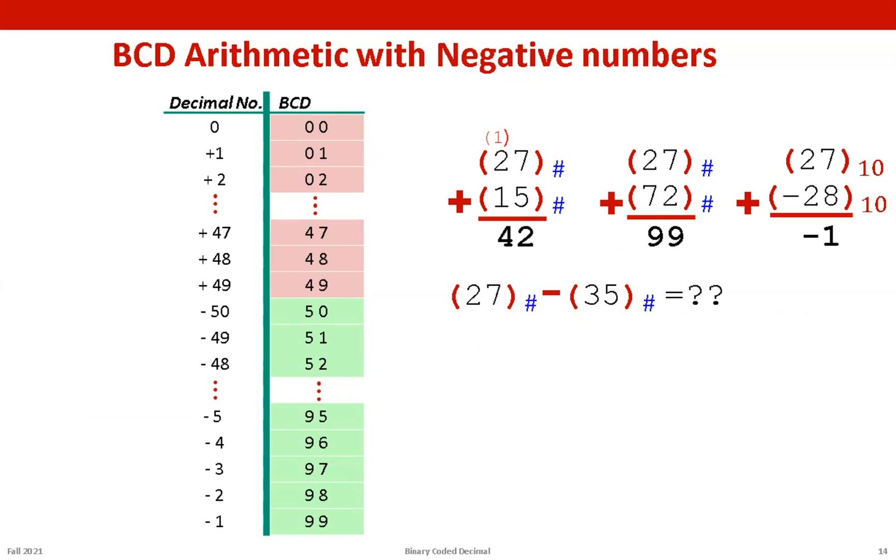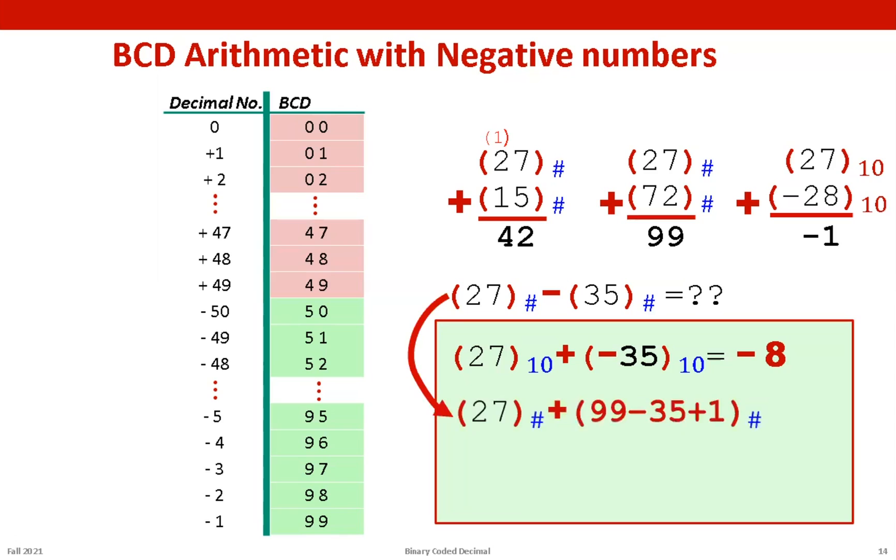We have this example: 27 minus 35. Both the numbers are in BCD representation. This is our work area where we solve this problem. So 27 in decimal plus -35 in decimal gives us -8. Now let us see in the BCD representation would we be able to obtain the same results as in decimal system? So as a first step we take the tens complement of the subtrahend. We subtract every BCD digit from 99 and we also invert the sign of the operation.